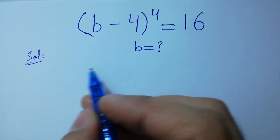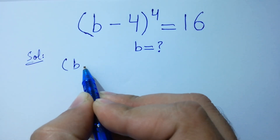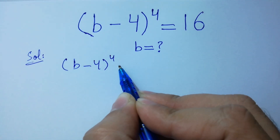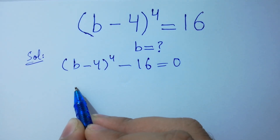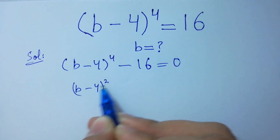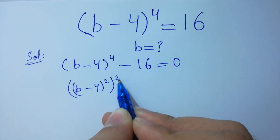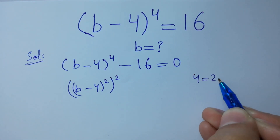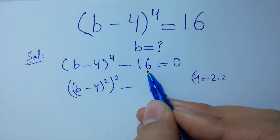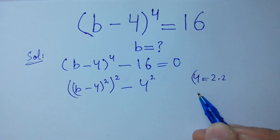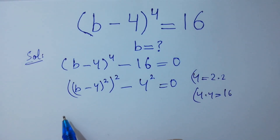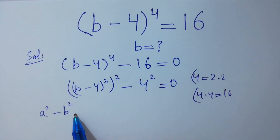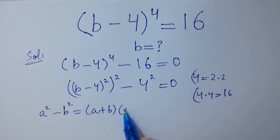This problem can be written as (b−4)^4 minus 16 equal to 0. This is the same as [(b−4)²]² since 4 equals 2 times 2, and minus 16 is 4² because 4 times 4 is 16, equal to 0. This is just like the formula a² minus b² which equals (a+b)(a−b).